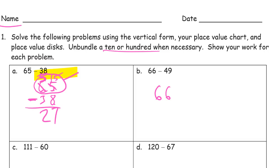66 minus 49. Again, 6 ones minus 9 ones — I don't have enough ones, so I have to unbundle a 10. When I unbundle that 10, I'm only going to have 5 tens left, but I'm going to have 10 more ones. So 10 ones plus that 6 is 16 ones. Now I can subtract: 16 minus 9 is 7. And 5 tens minus 4 tens — I'm going to have 1 ten left. 17.